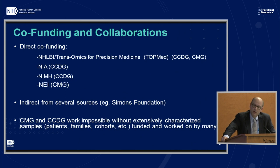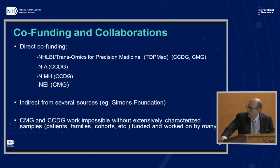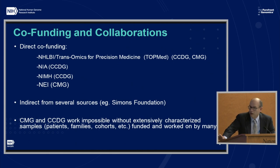There's also a lot of what I call indirect co-funding from several sources — where another entity is basically also interested in funding sequencing from the same phenotypes and sometimes from the exact same cohorts. It's great to be able to mix the data and do cross-analysis when we can. Both the CMGs and the CCDGs work would be impossible without extensively characterized samples, at the patient and family level for CMG and at the large cohort level for CCDG, funded and worked on by many outside the program.